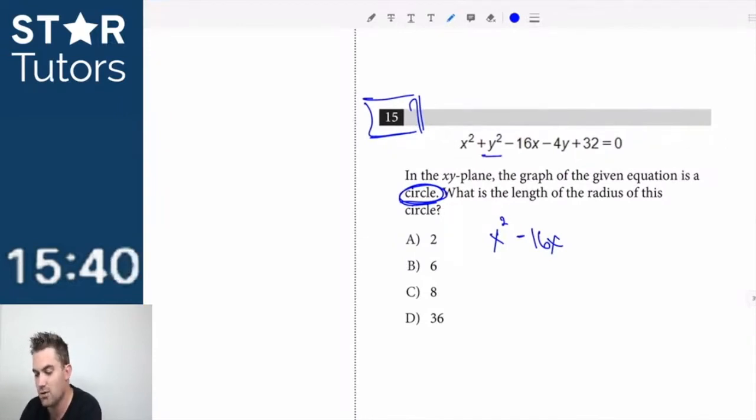Then you're going to complete the square for both x and y, so divide by 2, square it, so that's plus 64. You're going to plus 64.